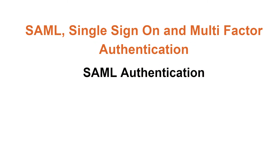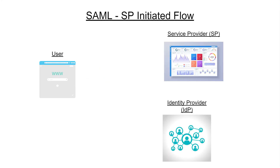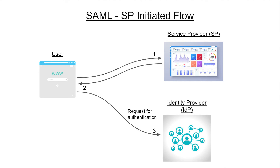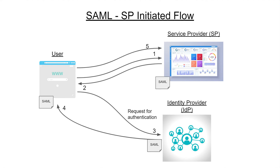The second method is referred to as the SP initiated flow. Here, the user starts by reaching out to the service provider, and since the user is not authenticated, the SP redirects the user to the identity provider using a request for authentication message. Once the user is validated, the IDP generates the SAML assertion. The assertion is then sent to the SP via the user agent, and the session can start. It's worth noting that during IDP authentication, this is where you would see any two-factor or multi-factor screens appear if additional user security is required.